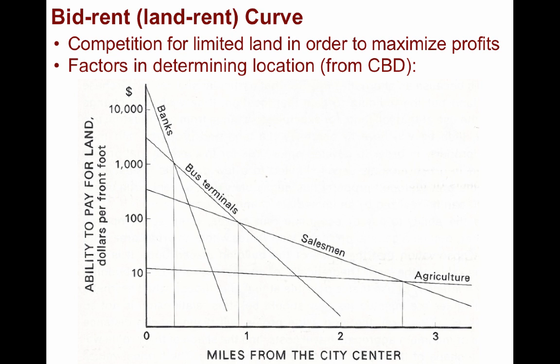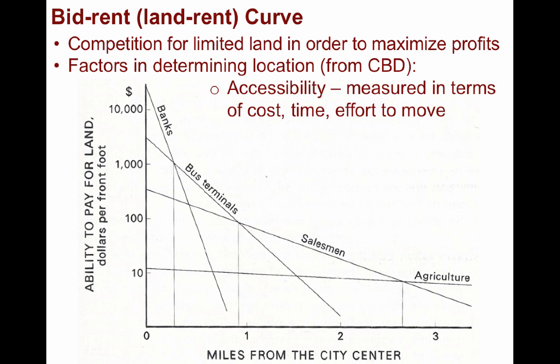One of the key factors in determining profitability is accessibility — the ease with which it is possible for people, and especially customers, to reach a location. Accessibility can be measured in terms of the cost, time, and effort it takes to reach a location. And like virtually everything else, the degree of accessibility can change for a plethora of reasons.